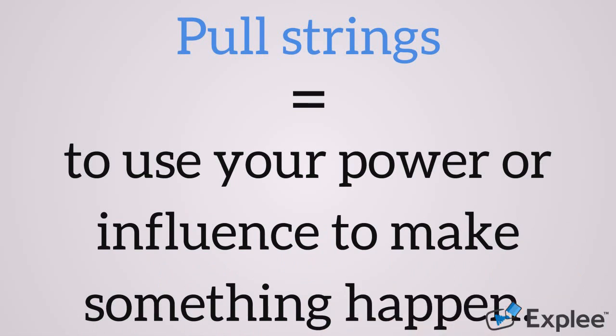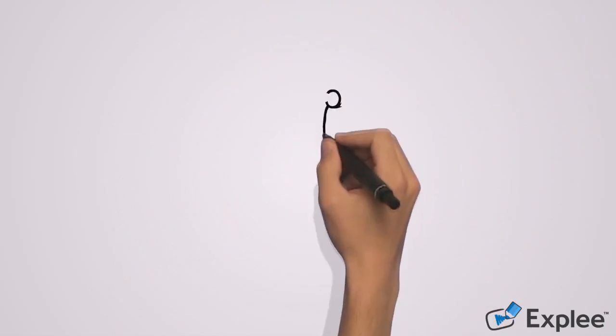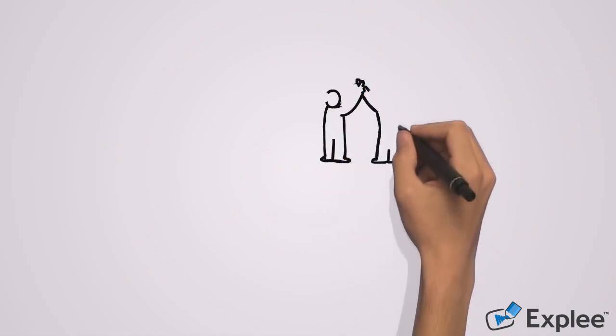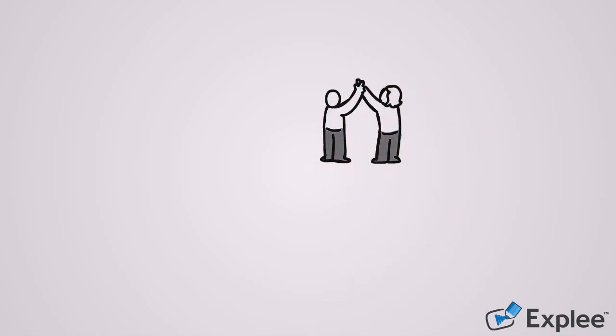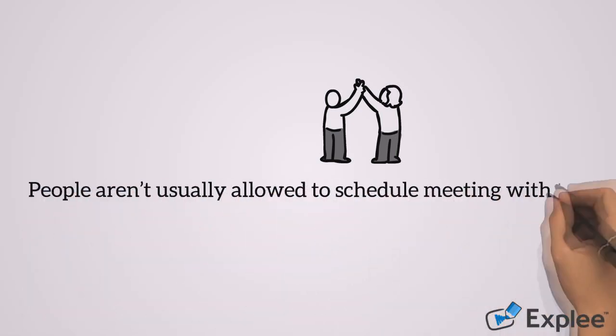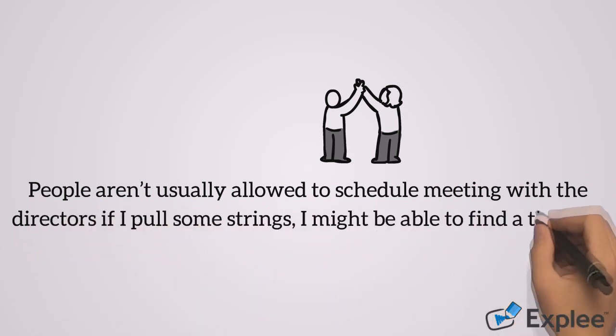For example, if your friend tells you that he wants to meet the director at your company, and it's very difficult for anyone to meet the director, but with your influence and position you were able to actually get him to meet the director. For example, we can say: People aren't usually allowed to schedule meetings with the directors, but if I pulled some strings I might be able to find the time for you to meet.